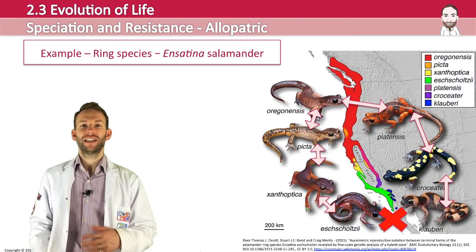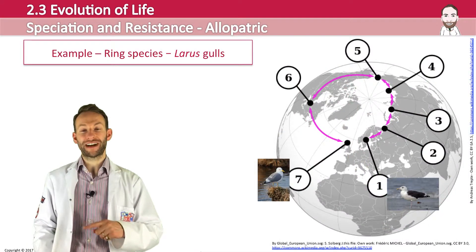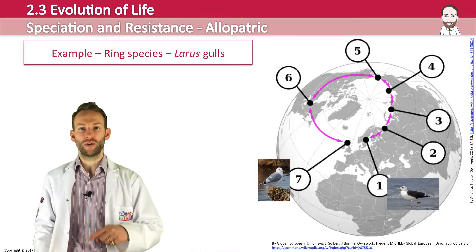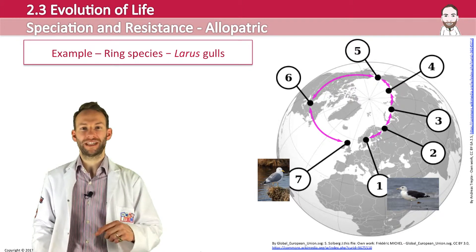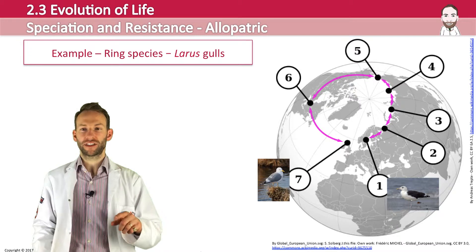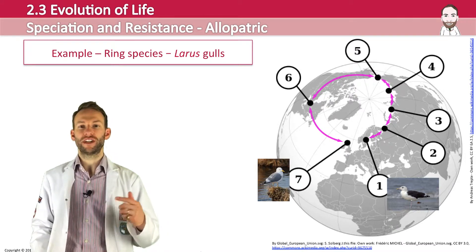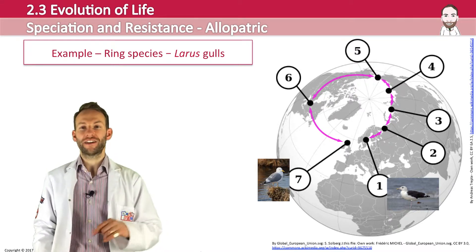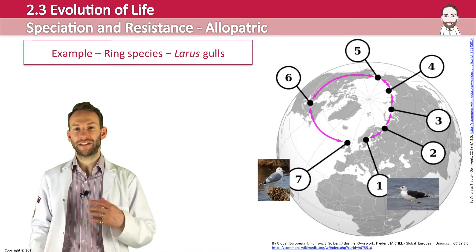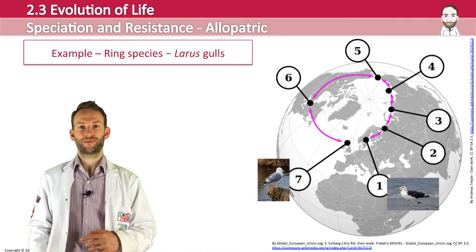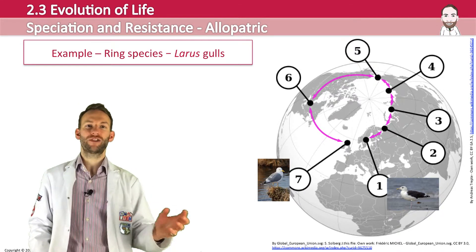Another example of a ring species is the Larus gulls. This range of gulls forms a ring around the North Pole. The lesser black-backed gulls shown at number one are sufficiently different — after all the evolution that occurred — from the ones at number seven that, although now very close to each other geographically, they can no longer interbreed. Different species.